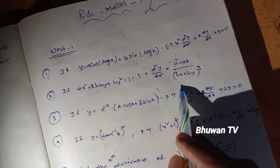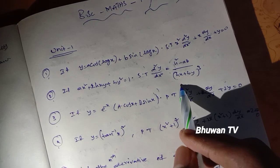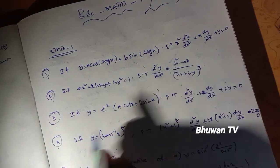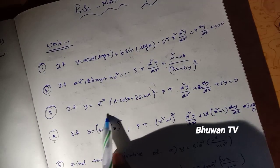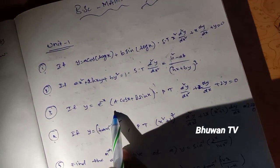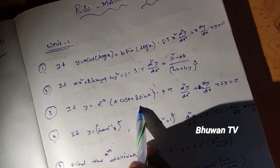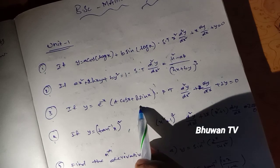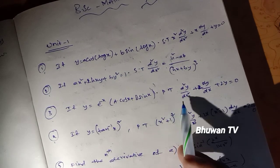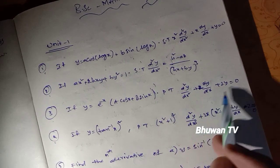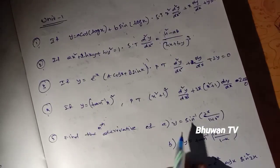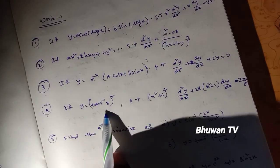Third question: if y equals e^(−x)(a cos x plus b sin x), prove that d²y/dx² plus 2 dy/dx plus 2y equals 0.